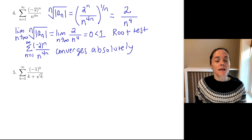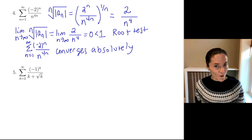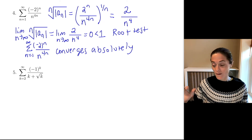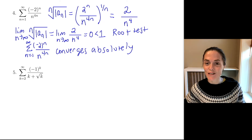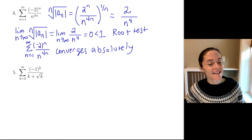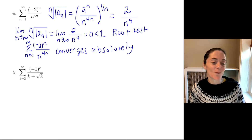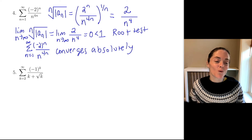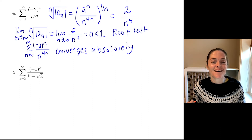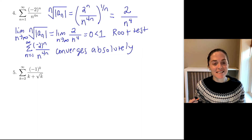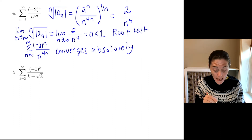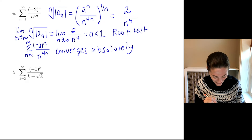It's very nice when we can use the root test or the ratio test on a series of positive and negative terms, because the conclusion is either converges absolutely if the limit is less than 1, or diverges if the limit is bigger than 1. You don't have to worry about the conditional convergence part — that's the one requiring the most work with series of positive and negative terms, and we will see that with the next one.